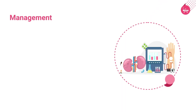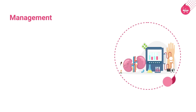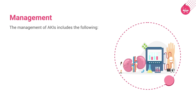A systematic approach to oliguria in the ICU patient is mandatory due to the multifactorial etiology of this problem, which can deteriorate to anuria and necessitate renal replacement therapy. Timely diagnosis and prompt treatment will decrease morbidity and mortality from this potentially preventable problem. The management of AKIs includes the following.